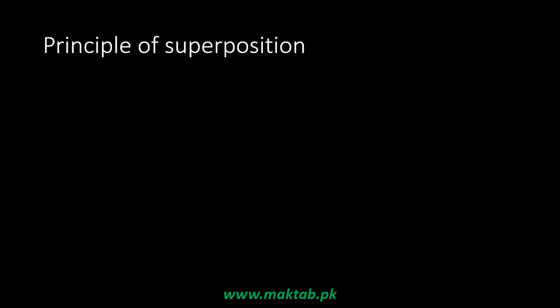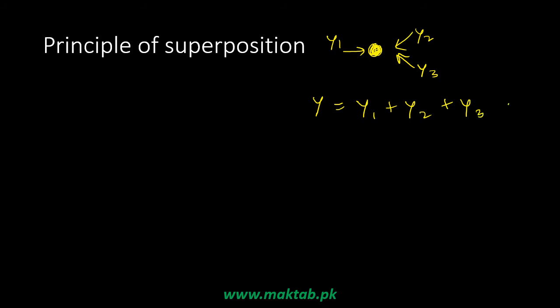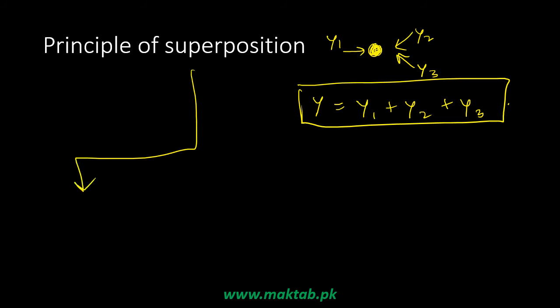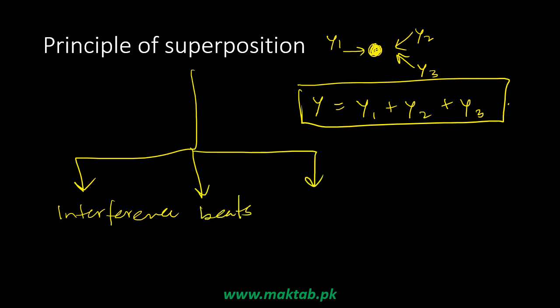The principle of superposition is a simple concept: a wave can travel through a particle. If one particle receives energy from more than one wave source, the total displacement of that particle is the sum of the individual displacements from each wave source. This principle gives rise to various phenomena including interference and stationary waves.